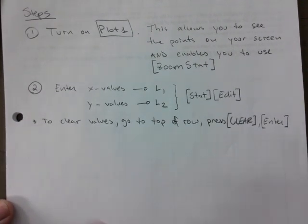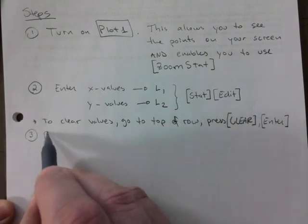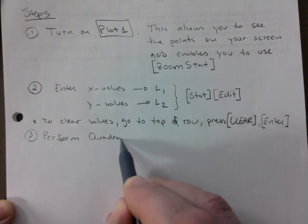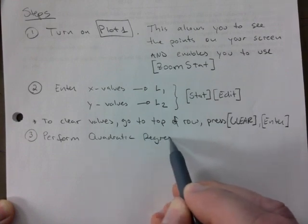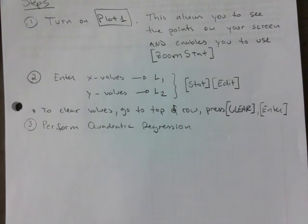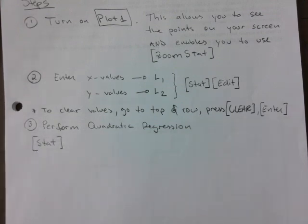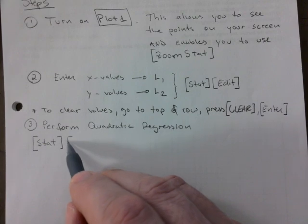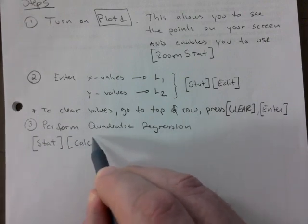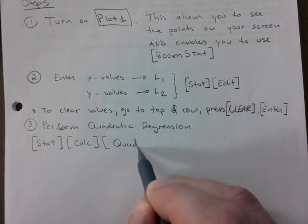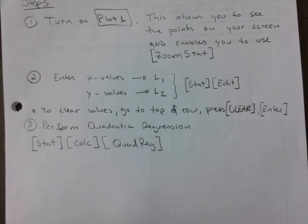Last step: perform quadratic regression. Here's how you do it — press STAT, which stands for statistics, go to the Calculate function, then select QuadReg, which stands for quadratic regression.